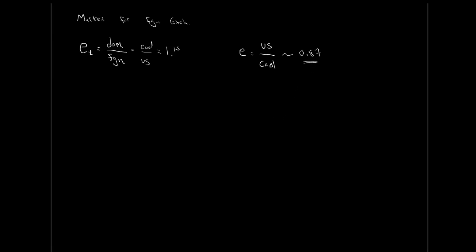We want to look at it as how many domestic units do I need to buy one foreign unit. From the perspective of prices, this makes a lot more sense. When we're buying a foreign currency, it's just like buying any other good. Say you wanted to buy a cup of coffee — you'd think about how many Canadian dollars you give up per cup, like $2 per cup of coffee. In the same way, exchange rates ask: how many Canadian dollars to buy one US dollar?